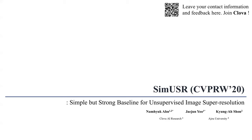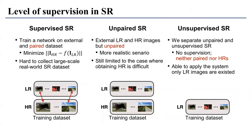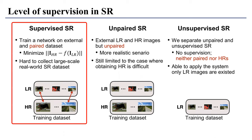Moving on to another super resolution model, we recently presented at a CVPR workshop this year. This is about unsupervised image super resolution, work done with my intern Nam Hyuk. We presented a simple baseline that remarkably achieved state-of-the-art. There is a level of supervision in super resolution. In the supervised setting, you give pairs of low-resolution and high-resolution patches so that you can learn a function by supervised learning.